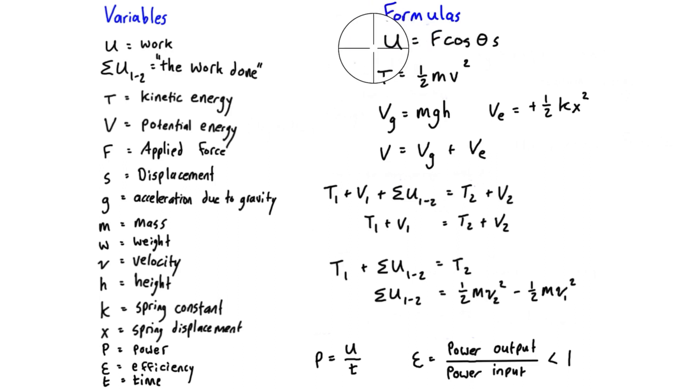The capital U here, this is for work. Work is in units of joules - it's the same thing as newton meters. The expression for that is just F cos theta S. F is the applied force, S is the displacement, and cos theta is the angle between the two. If they're aligned, this will just become one.